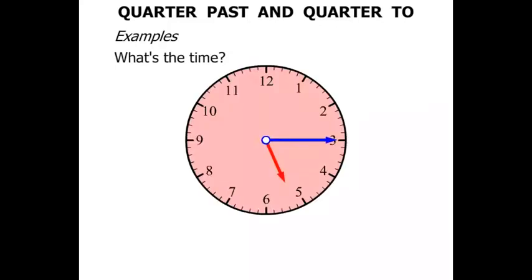Terrific! Let's look at some examples. What's the time? So here's a clock here. The first thing to do is have a look at the minutes hand. It's pointing at the three. That indicates quarter past.